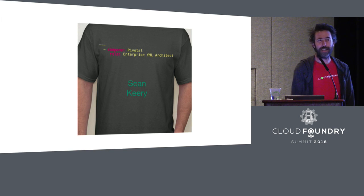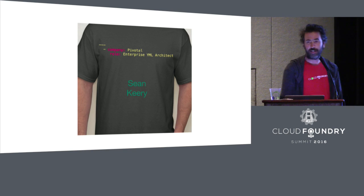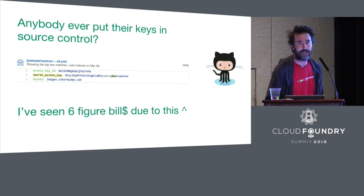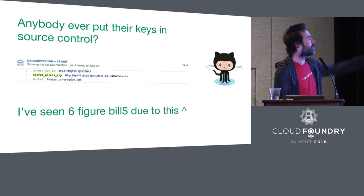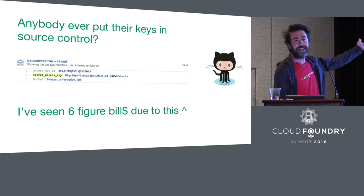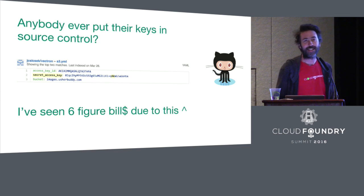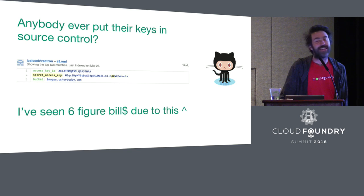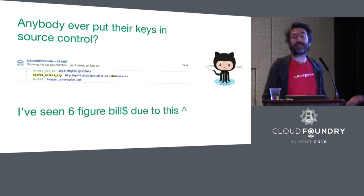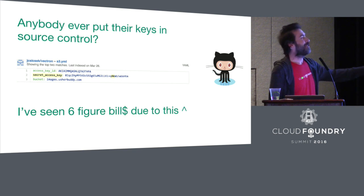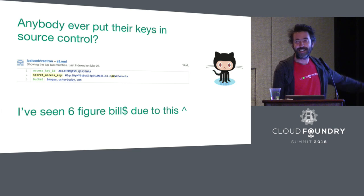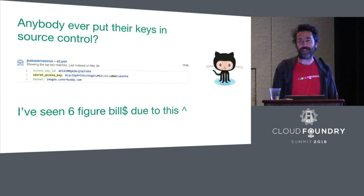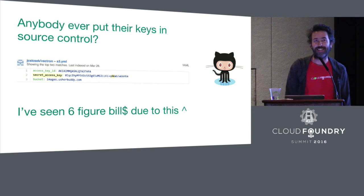Who's ever pushed a manifest to GitHub with the keys in it? If you do a quick search out on GitHub you'll find all kinds of AWS access keys. It was an accident, right? We had an accident — we had a six-figure bill from Amazon. We don't want to do this ever.